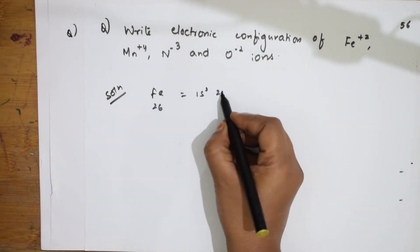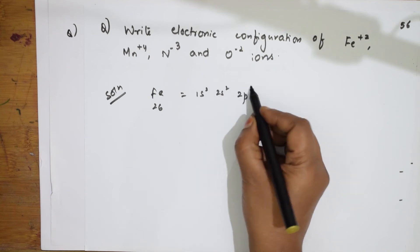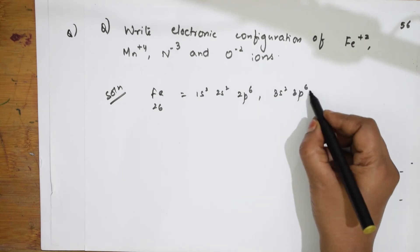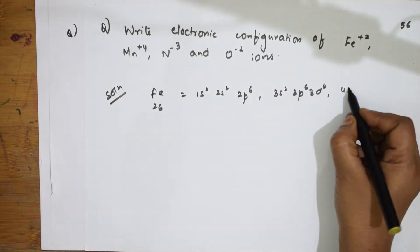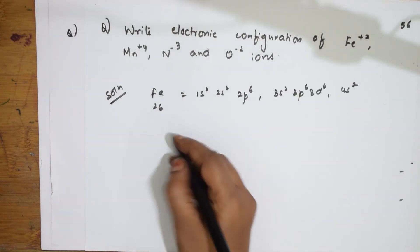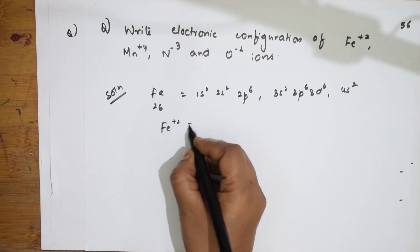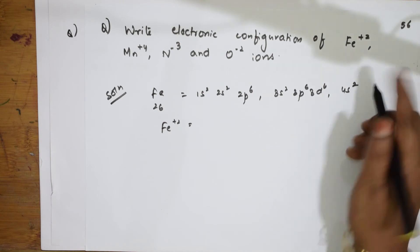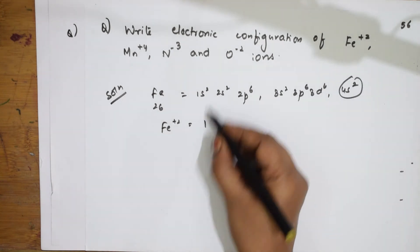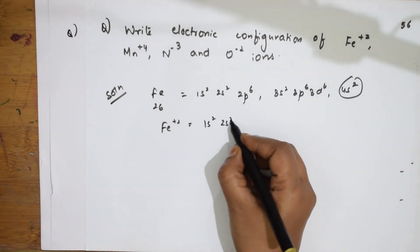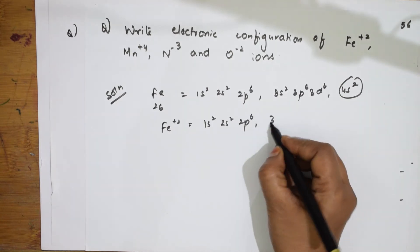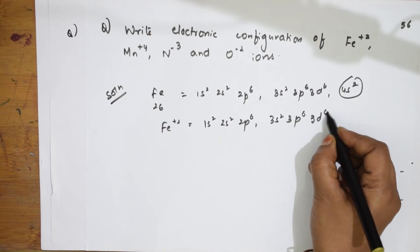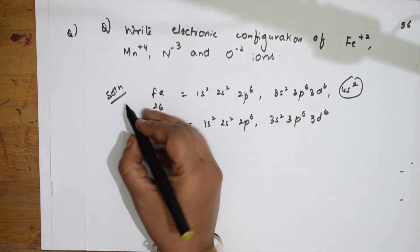For Fe²⁺, two electrons are lost from the outermost shell (4s²). So the configuration becomes 1s², 2s², 2p⁶, 3s², 3p⁶, 3d⁶. The 4s² electrons are removed, giving Fe²⁺.